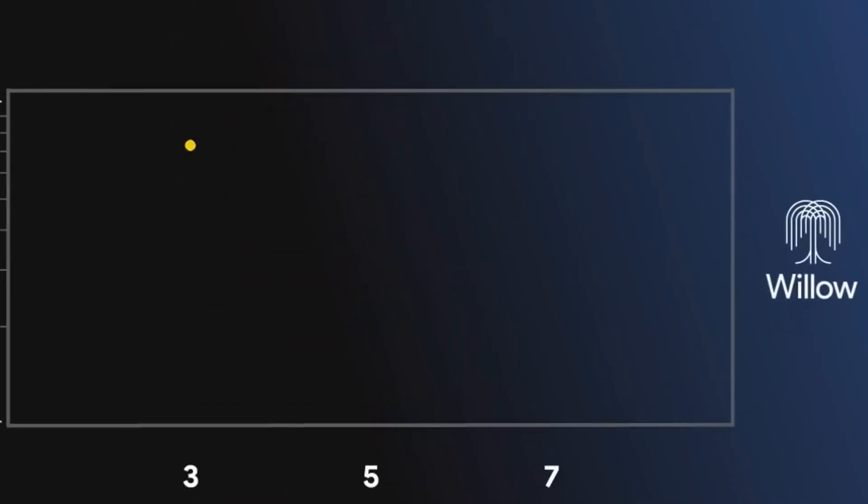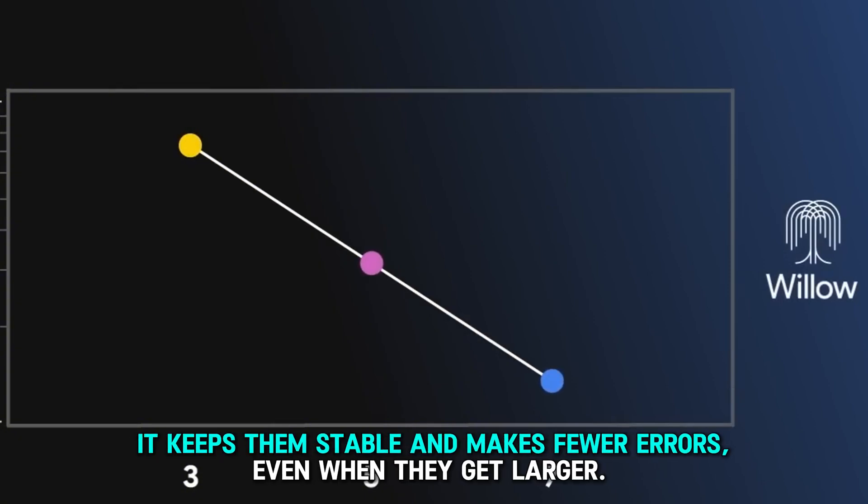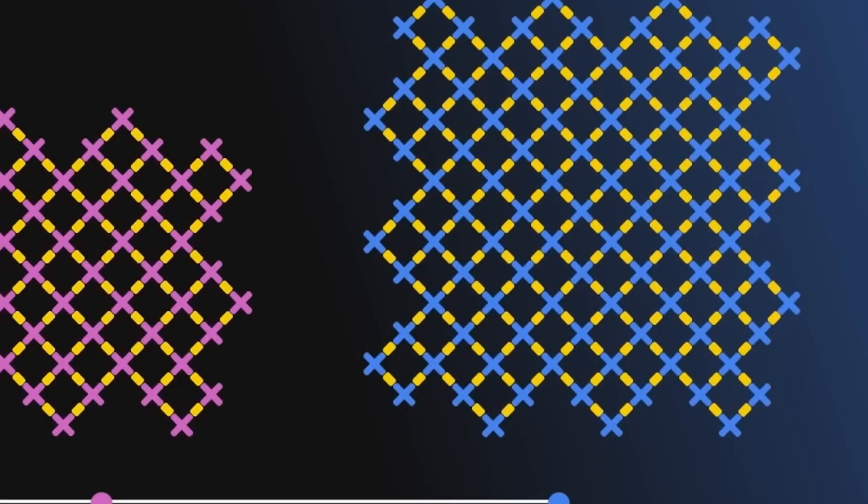Willow helps fix one of the biggest problems with quantum computers. It keeps them stable and makes fewer errors, even when they get larger. This is important because it means these computers can do bigger tasks and work more reliably.